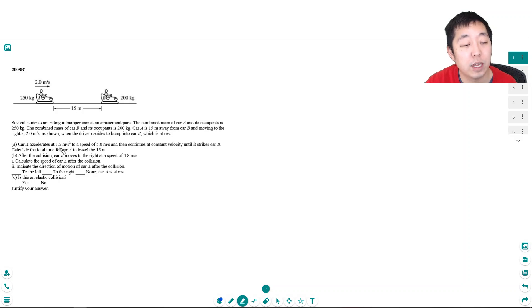If car A accelerates at 1.5 meters per second squared to a speed of 5 meters per second and then continues at constant velocity until it strikes car B, calculate the total time for car A to travel the 15 meters. Okay, so part A is actually a kinematic portion of the question. It's a motion question.